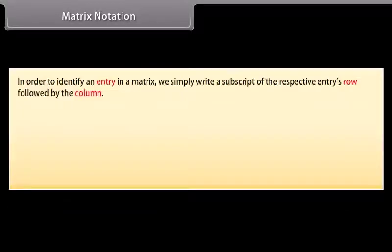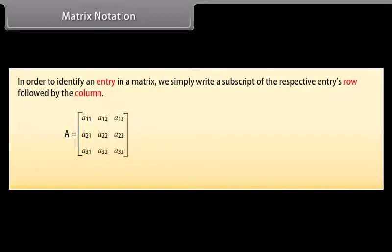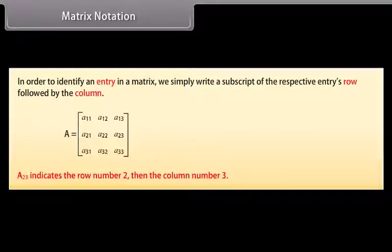Matrix notation: to identify an entry in a matrix, we write a subscript of the respective entry's row followed by the column. In matrix A, we write A₂₃ to denote the entry in the second row and third column. A₂₃ indicates row number 2 and column number 3.